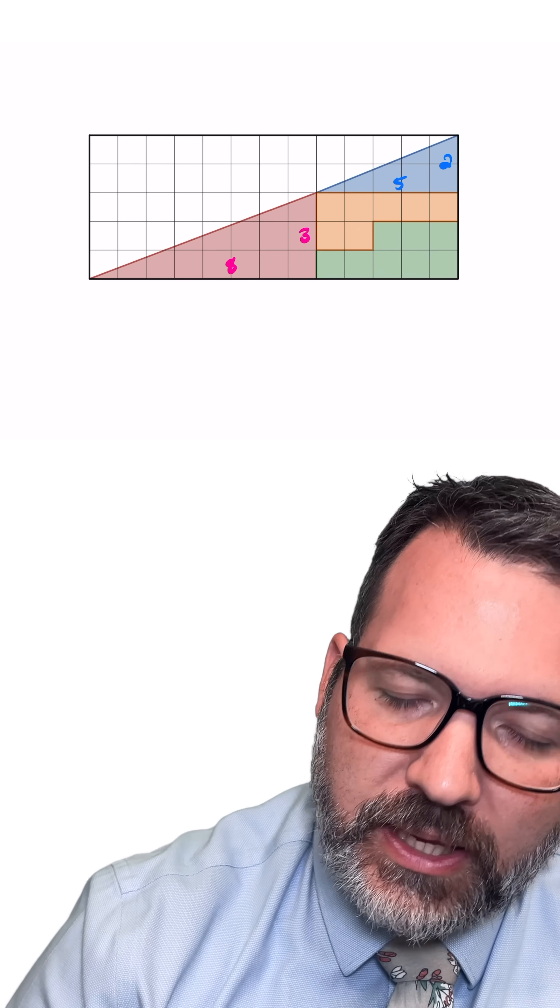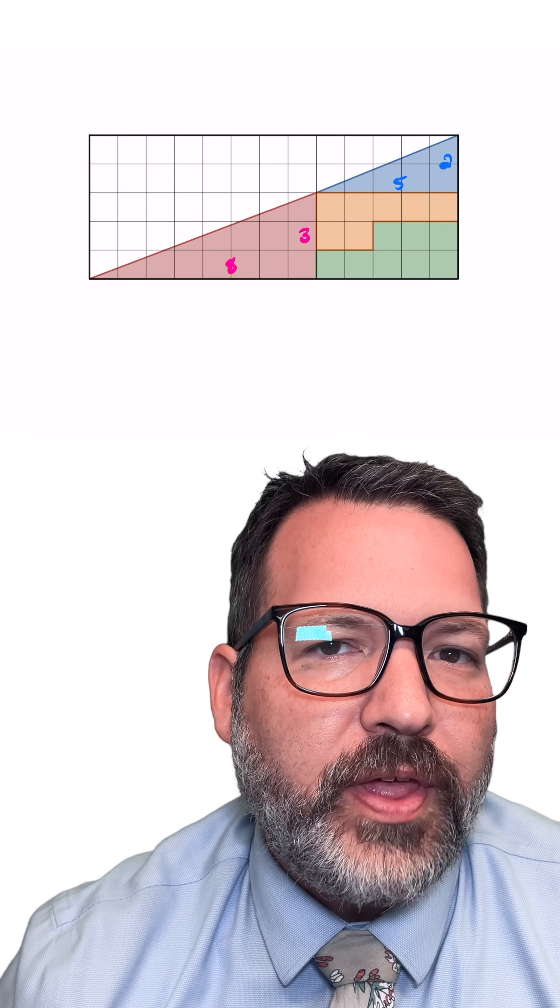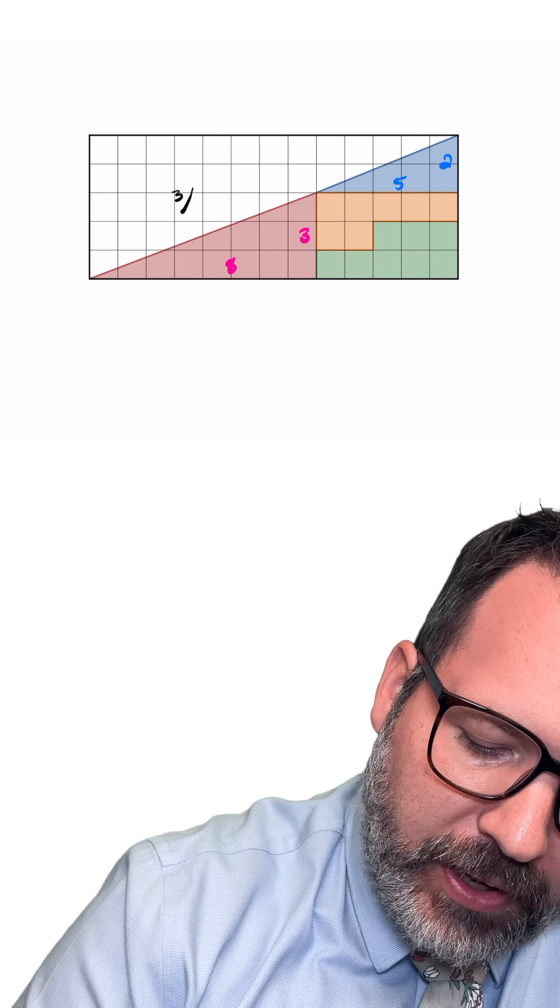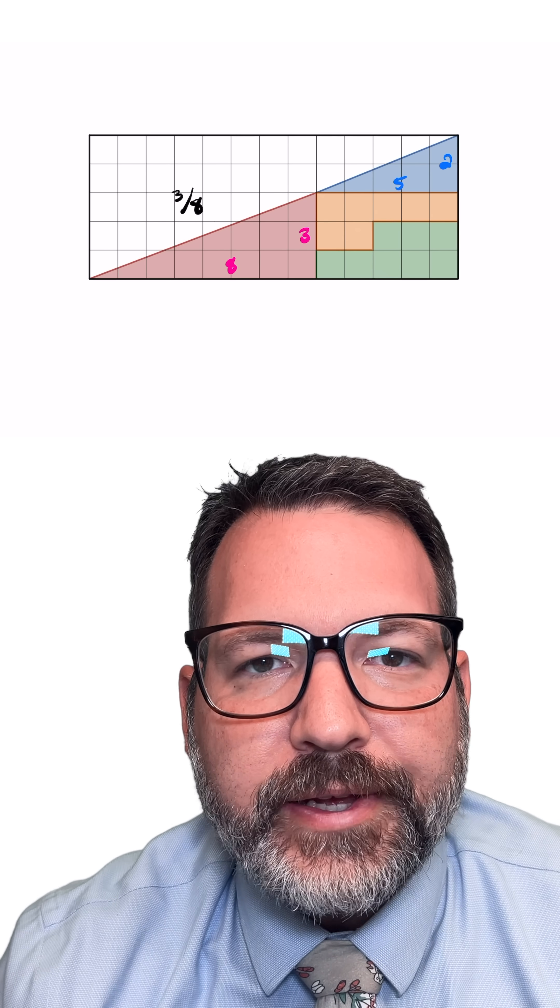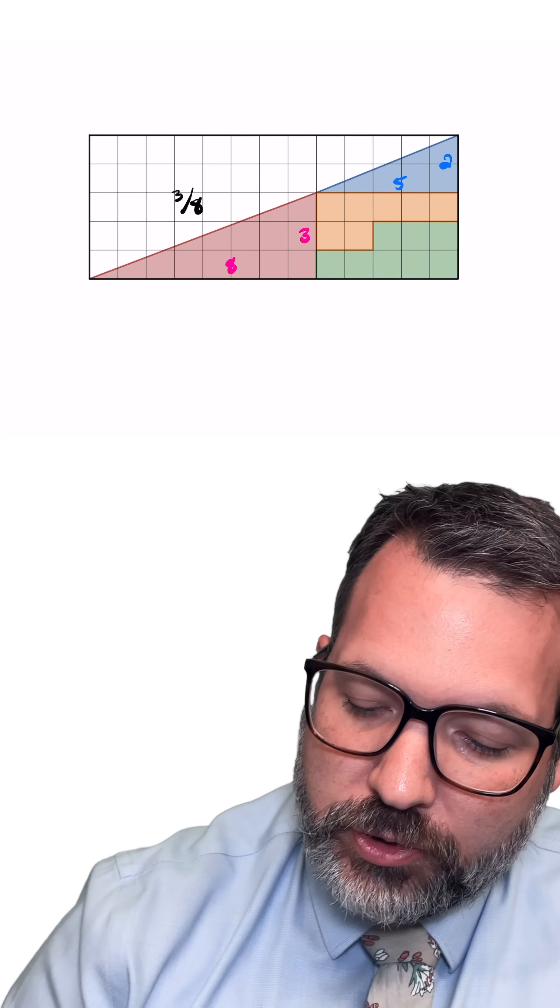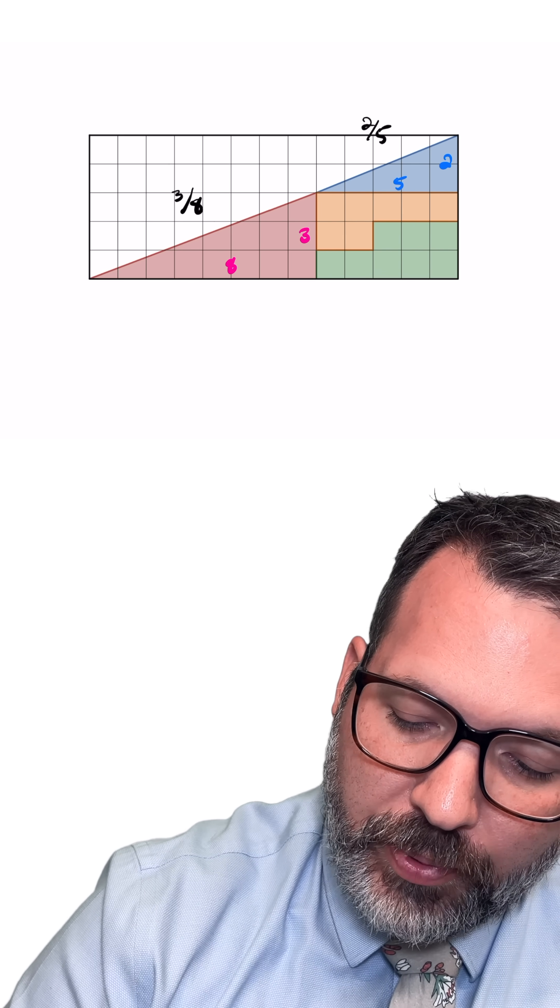Looking at the bases and heights that we've come up with now, we can tell that can't possibly be a single triangle. The red triangle has a hypotenuse with a slope, that is a rise over run, of up three over eight. Whereas the smaller blue triangle has a hypotenuse with a slope of up two over five, that is two fifths. Three eighths and two fifths, though they are very close together, are not actually the same ratio.